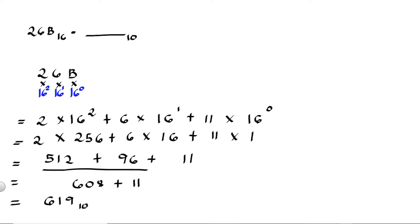The decimal equivalent of 26B hex is 619.